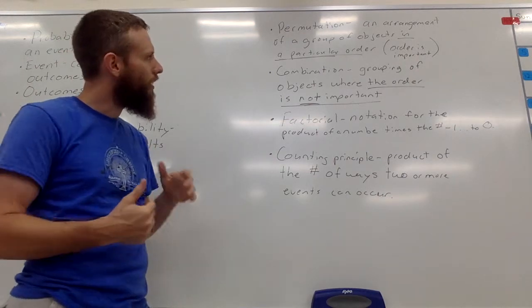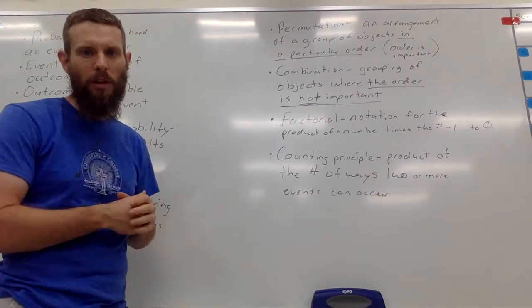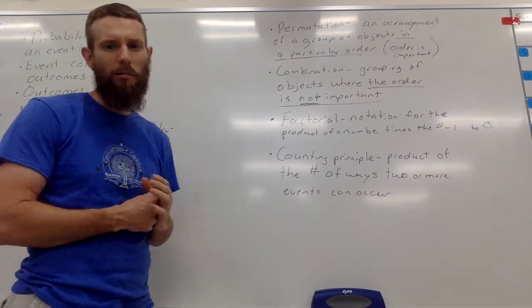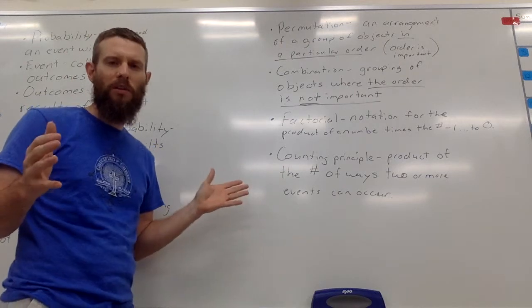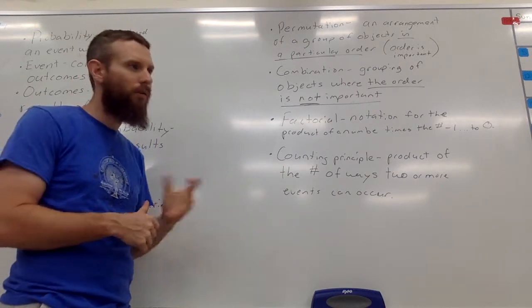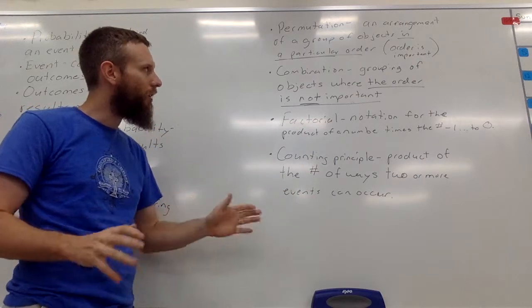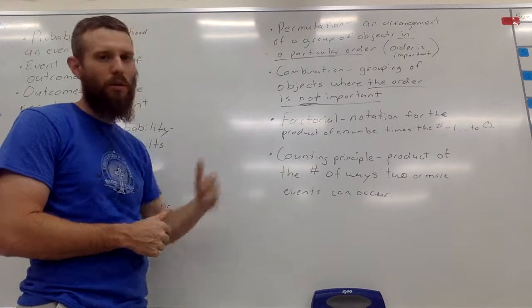So permutation and combination. Interestingly, your combination lock, if you have a combination lock, that's not really a combination according to probability terminology because if your lock of combination is 17, 24, 6, if you try to put in 24, 6, 17, it will not open. Okay, so a combination lock is in fact really a permutation because the order matters.